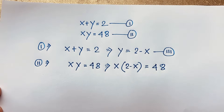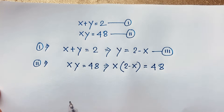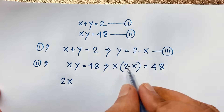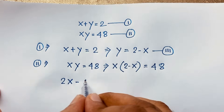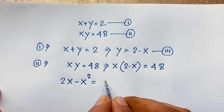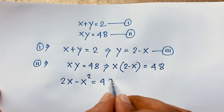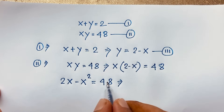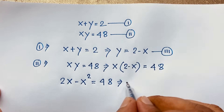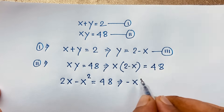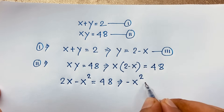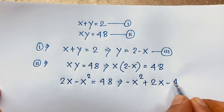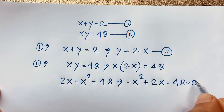Then here 2 times x will be 2x, and x times x will be x squared, so 2x minus x squared is equal to 48. Then moving positive 48 to this side it will be negative 48, giving us negative x squared plus 2x minus 48 is equal to 0.